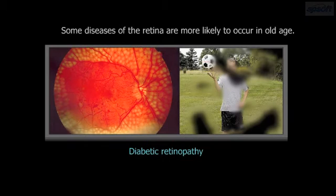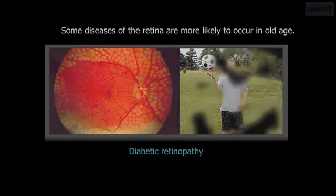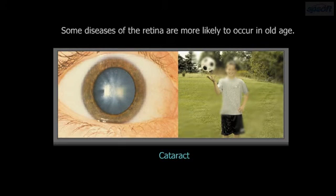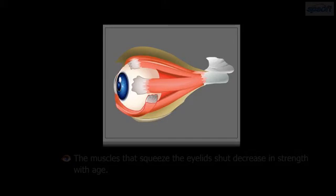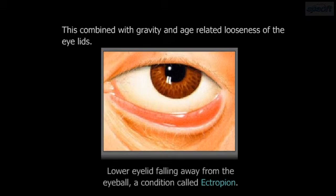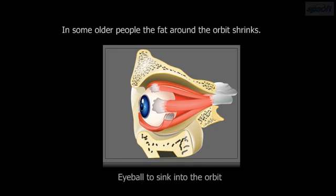Some diseases of the retina are more likely to occur in old age, including macular degeneration, diabetic retinopathy, and retinal detachment. Other eye diseases such as cataracts also become common. The muscles that squeeze the eyelids shut decrease in strength with age. This, combined with gravity and age-related looseness of the eyelids, sometimes results in the lower eyelid falling away from the eyeball.